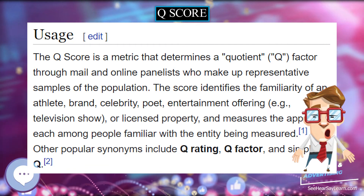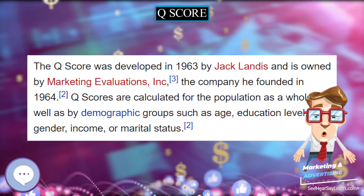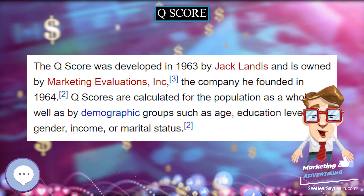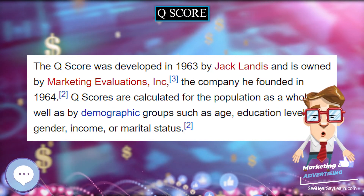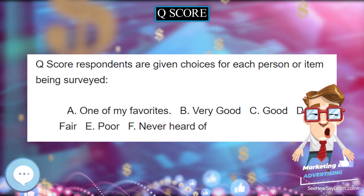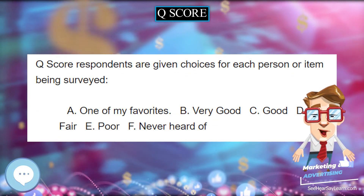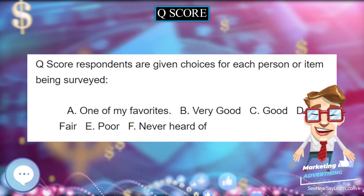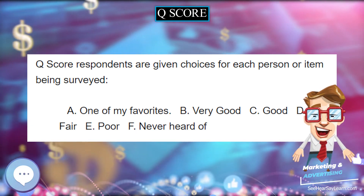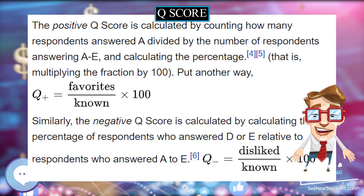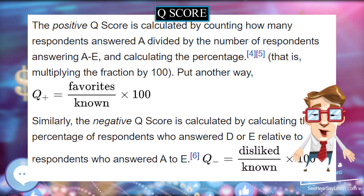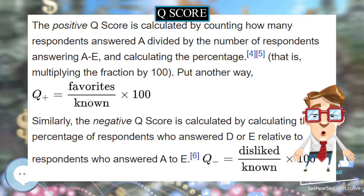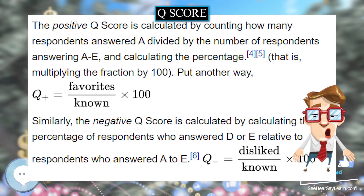Other popular synonyms include Q-rating, Q-factor, and simply Q. The Q-score was developed in 1963 by Jack Landis and is owned by Marketing Evaluations Incorporated, the company he founded in 1964.